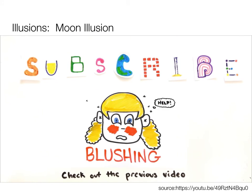So you heard them talk about the Moon Illusion. What's interesting is most of these illusions are playing on different kinds of things. This one's playing on some information about relative height and size constancy. All of these different things are playing into these different illusions. So that wraps up our conversation about depth perception. Thanks. Bye.